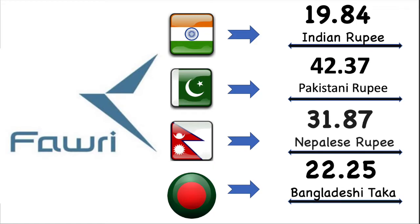Now we are going to talk about 4eBank exchange value for each country in details. Indian Rupees market exchange value is 19.72. Pakistan Rupees market exchange value is 42.01. Nepal Rupees market exchange value is 31.80 Nepalese Rupee. Bangladesh market exchange value is 22.23 Bangladesh Taka.